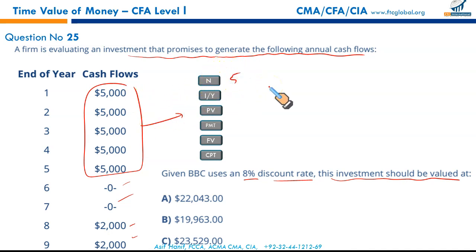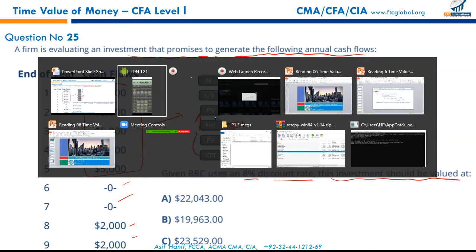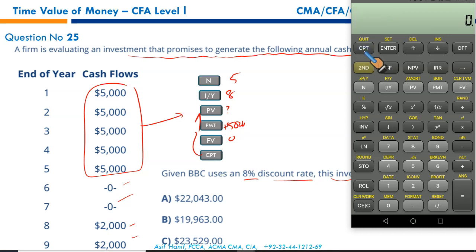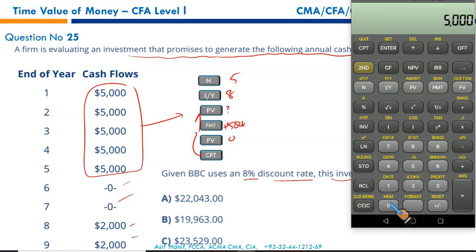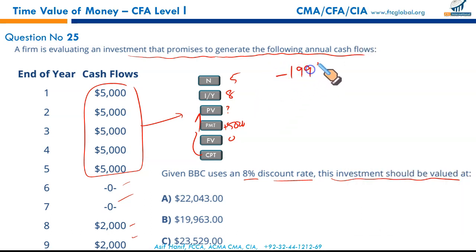For the recurring $5,000 cash flows: N = 5, I/Y = 8%, PMT = $5,000, FV = 0 — compute PV = $19,963. For the year-8 and year-9 cash flows of $2,000 each, discount individually: $2,000 ÷ 1.08⁸ = $1,080.53, and $2,000 ÷ 1.08⁹ = $1,000.49.